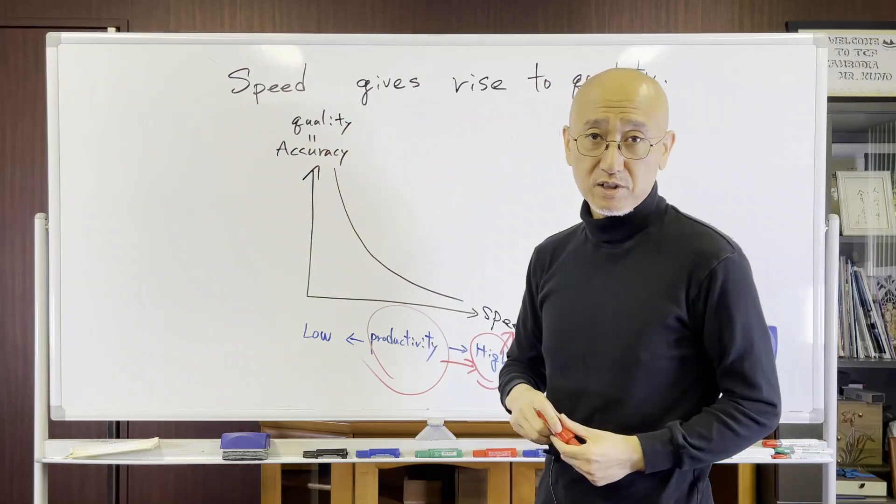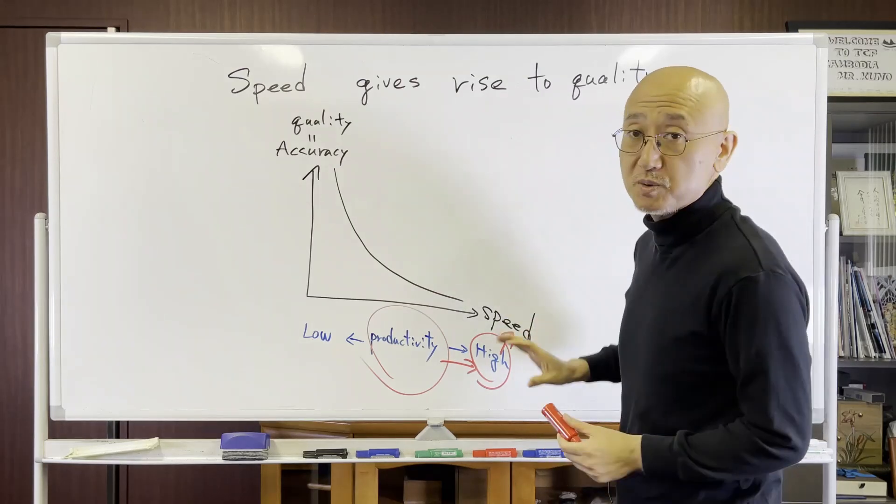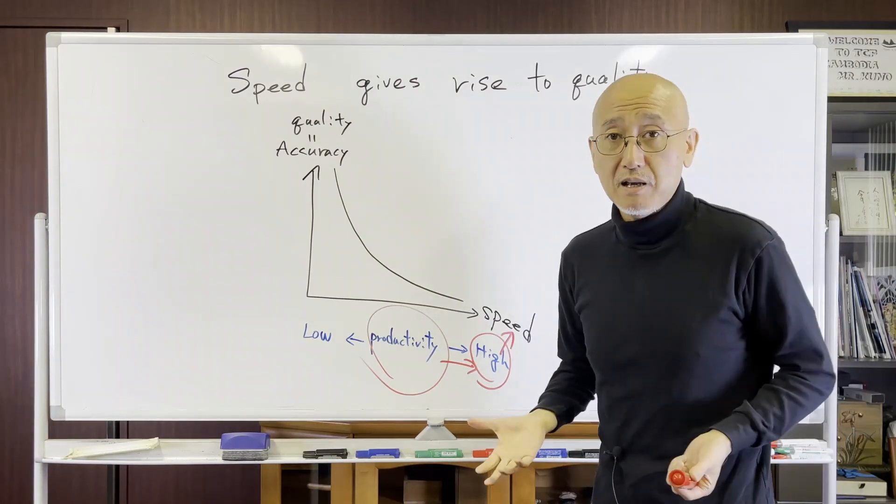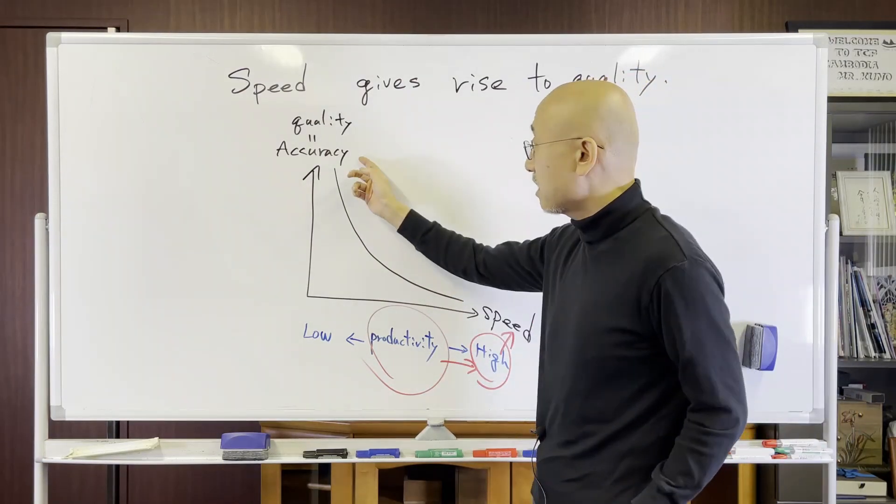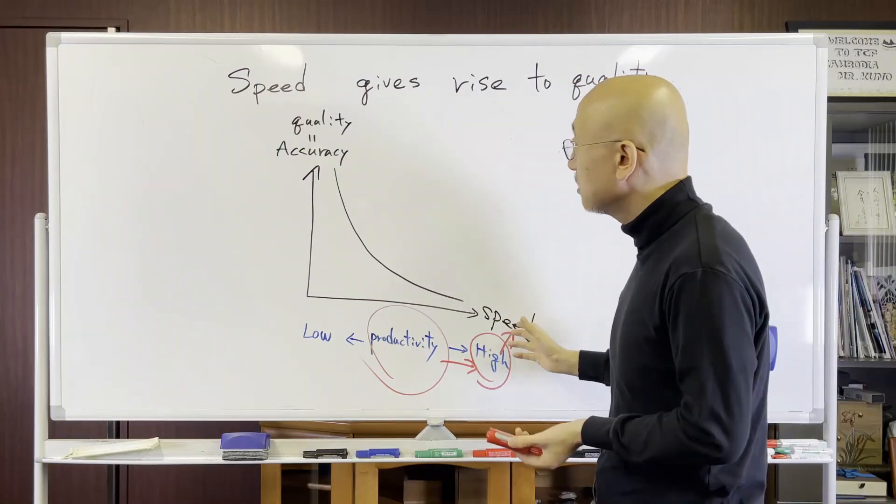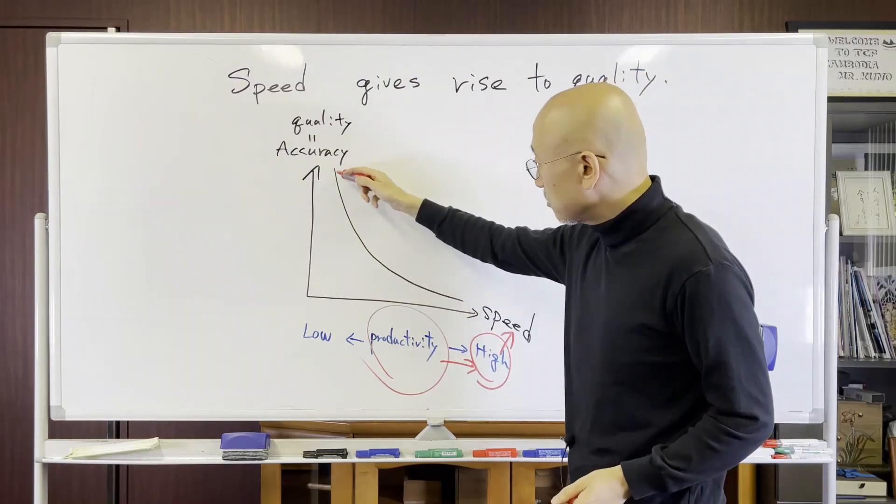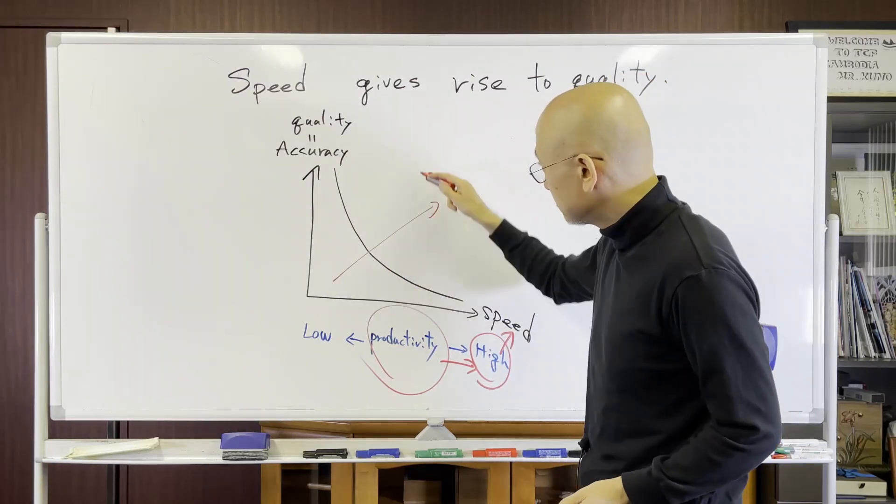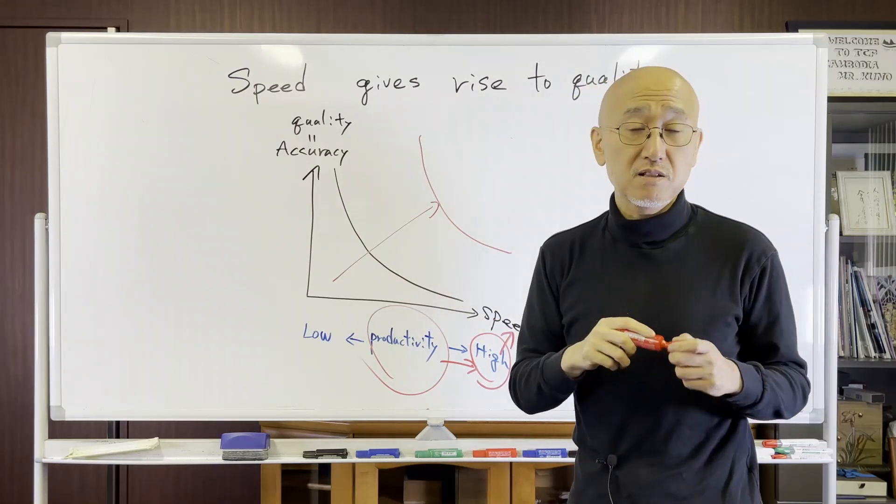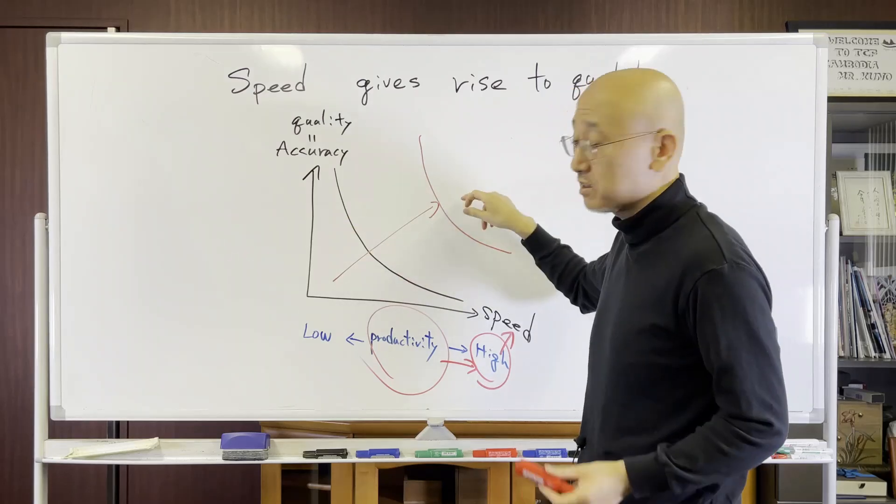However, actually, even if we increase speed, we have lots of time to reconsider the accuracy, to check again. And we have lots of time to reconsider the quality. In this case, not this curve, but the curve will be here. So this is a paradigm shift, jump out from this thought to here.